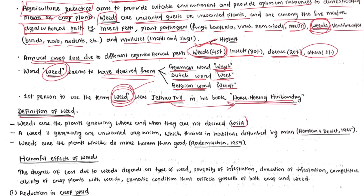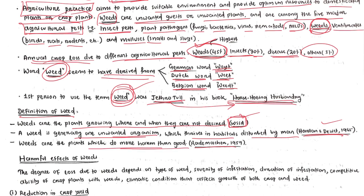The Weed Science Society of America defined weed as a plant growing where and when it is not desired — any plant that is undesirable at a particular place and time. Harland and Dewitt in 1965 proposed that a weed is an unwanted organism which thrives in a habitat disturbed by man. Rademacher in 1959 proposed that weeds are plants which do more harm than good.